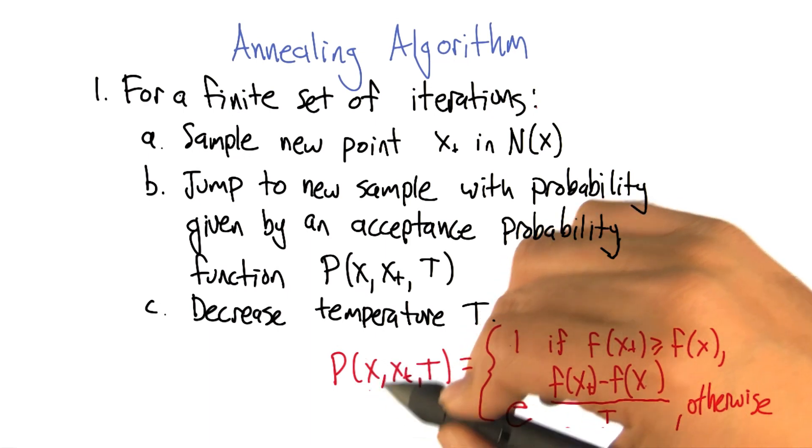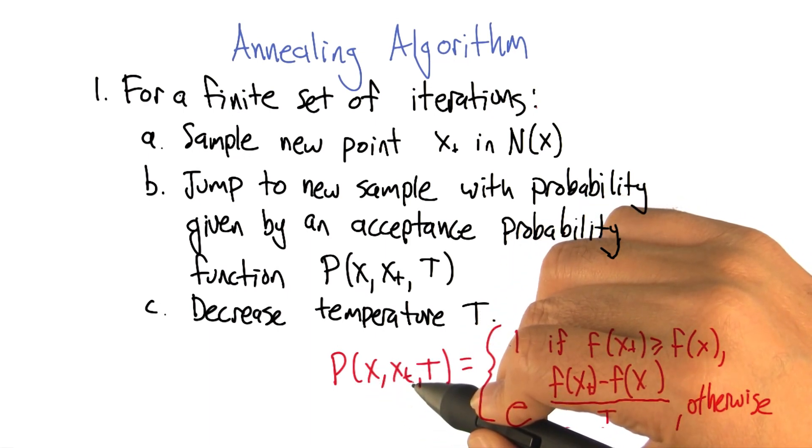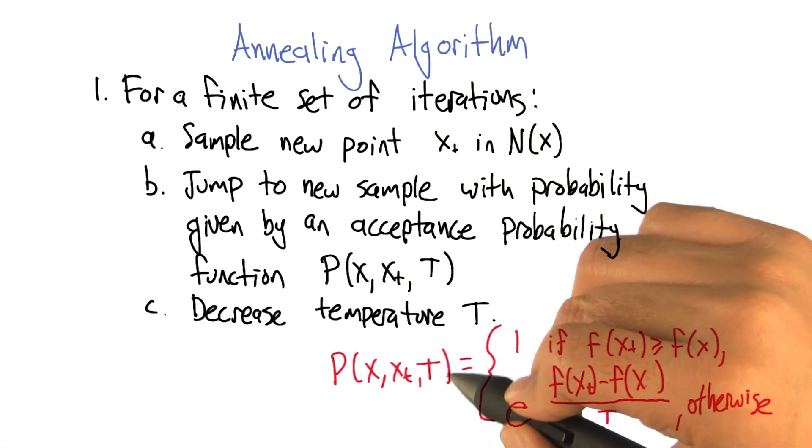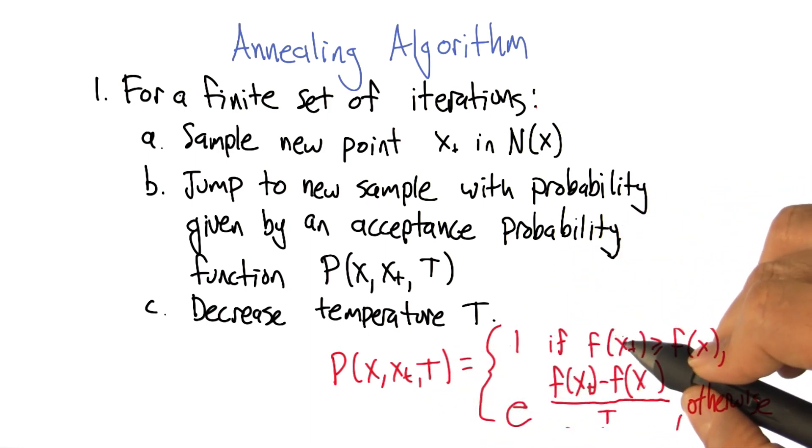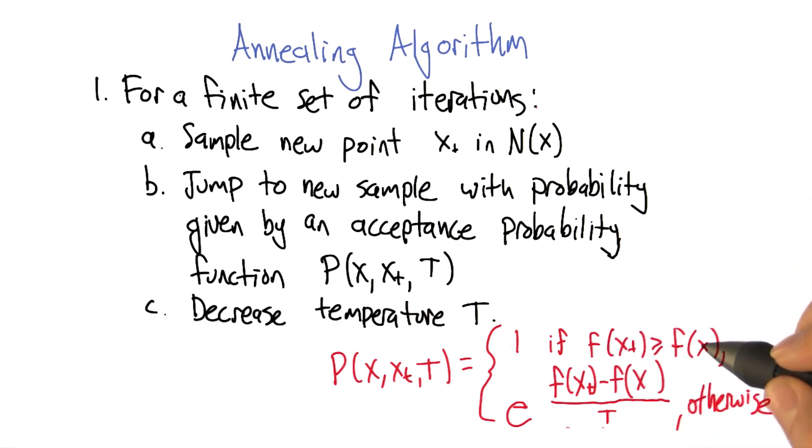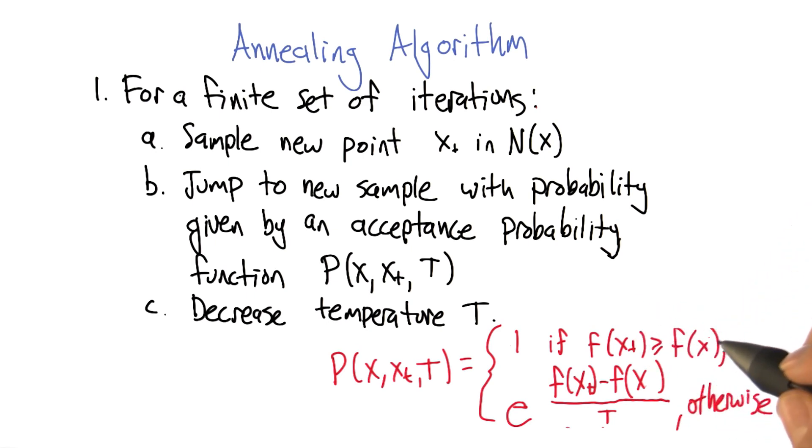So the probability, if we're currently at x and we're thinking about moving to x_t, and the current temperature is capital T, then what's going to happen? If the fitness of the new point is bigger than or equal to the old point, we're just going to make the move. So we always hill climb when we can do that. So that's just regular old hill climbing.